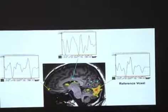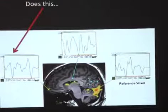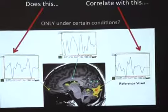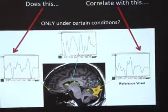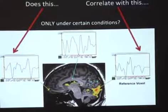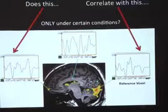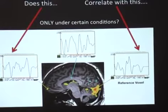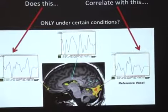Context-dependent correlations, or PPIs, take this a step further. The only extra step is using the same setup we had before — we're asking, does this voxel correlate with another voxel or our seed region, but only under certain conditions? Context-dependent correlations can only be done when there's an actual task involved. The whole idea is: do we see any change in correlation, but only under condition A as opposed to some other condition?